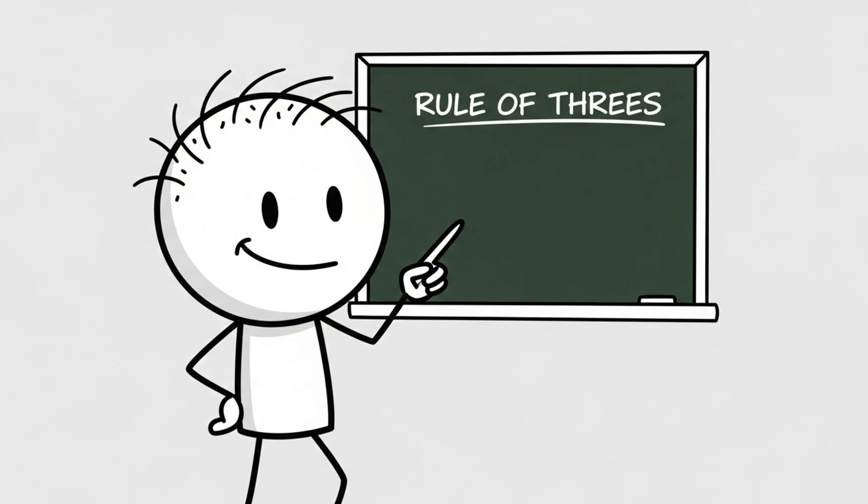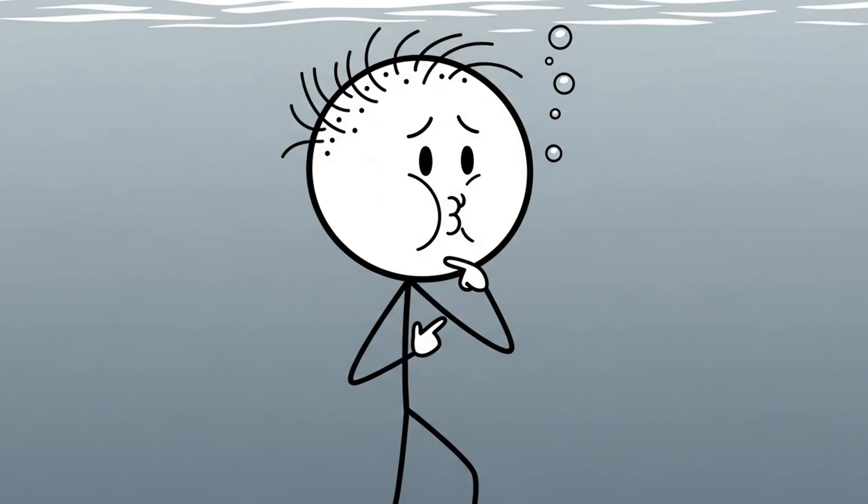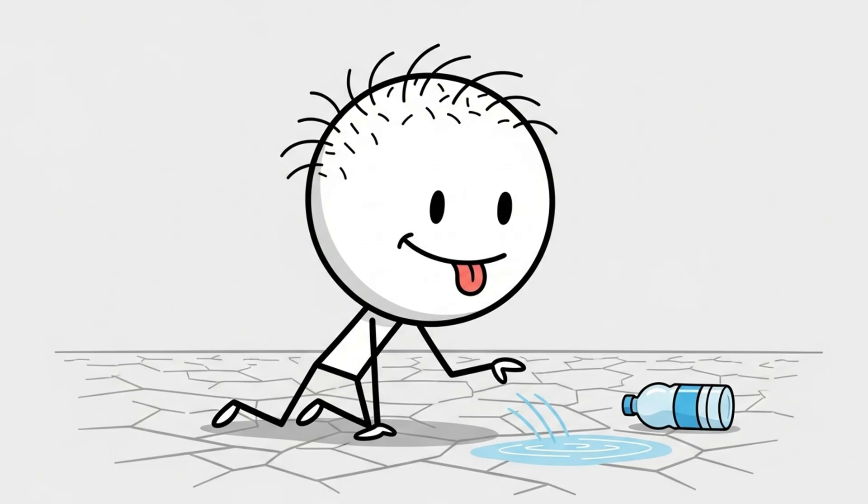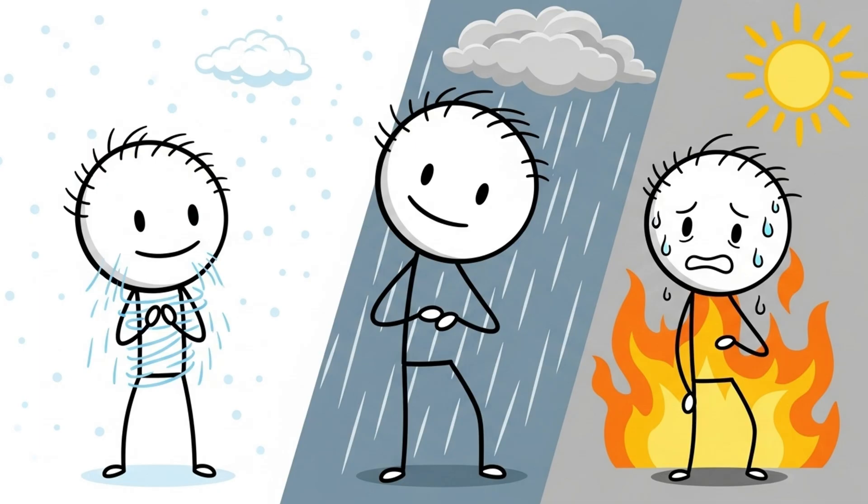There's a thing called the rule of threes. Three minutes without air, three hours without shelter in extreme conditions, three days without water, and three weeks without food. Which means that if it's freezing, raining, or blistering hot, lack of shelter will kill you way faster than dehydration.